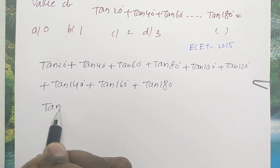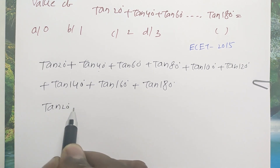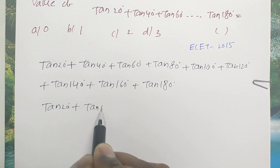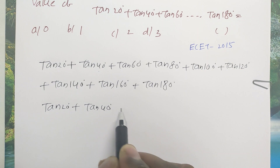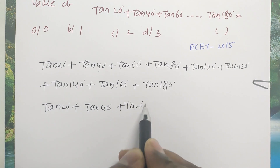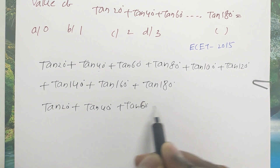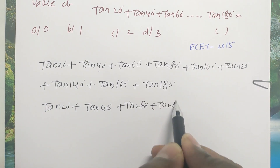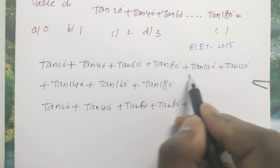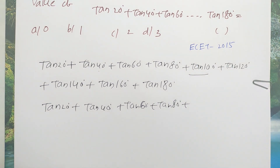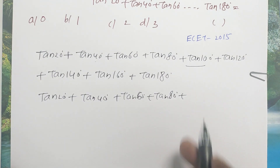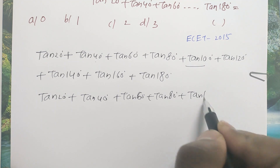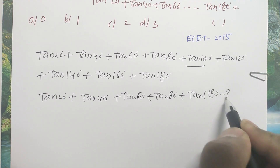So we have tan 20 degrees plus tan 40 degrees plus tan 60 degrees plus tan 80 degrees, plus tan 100 degrees. Now, tan of 100 degrees equals tan of 180 minus 80 degrees.